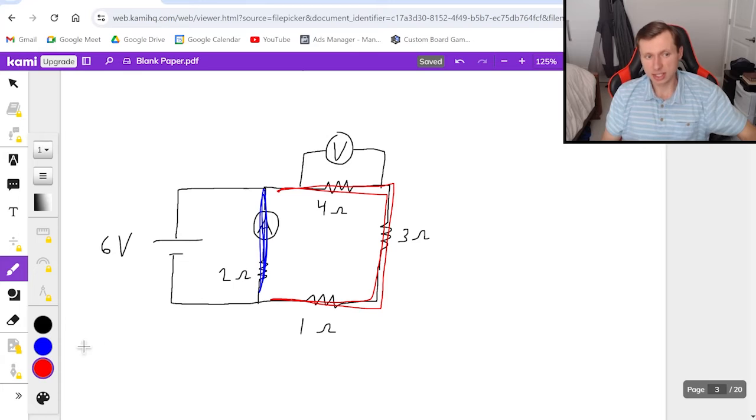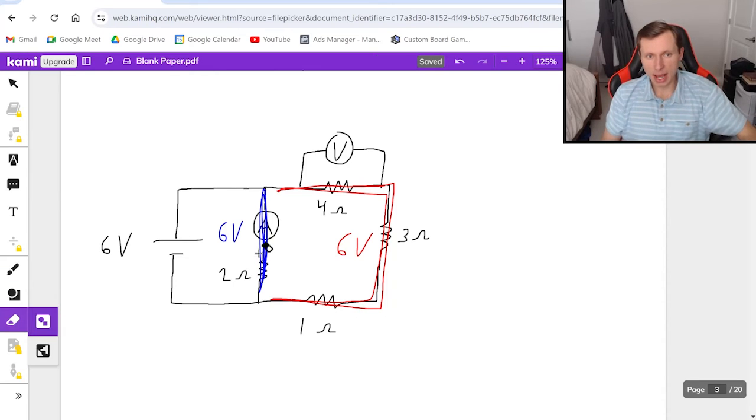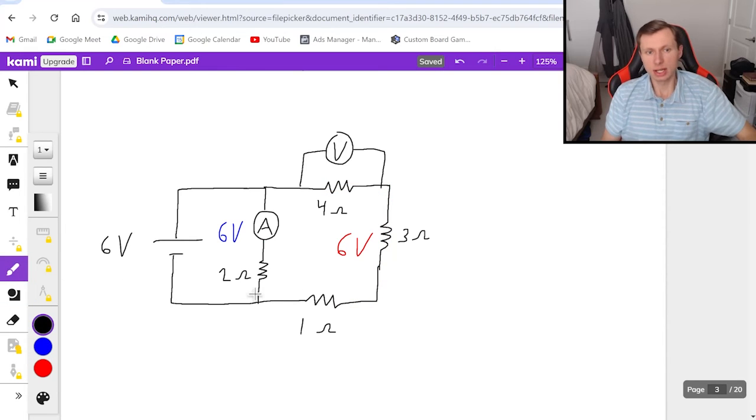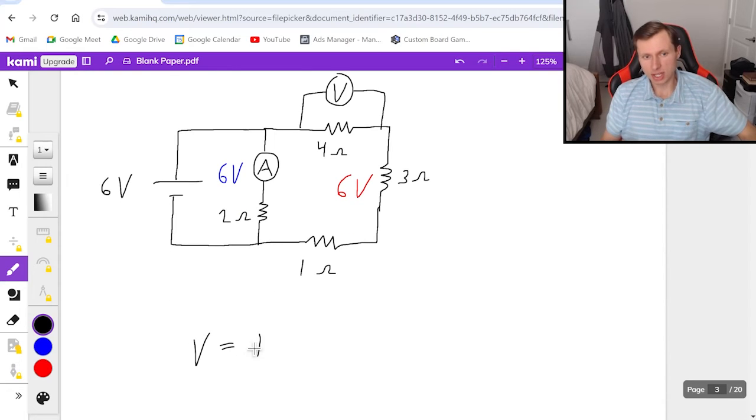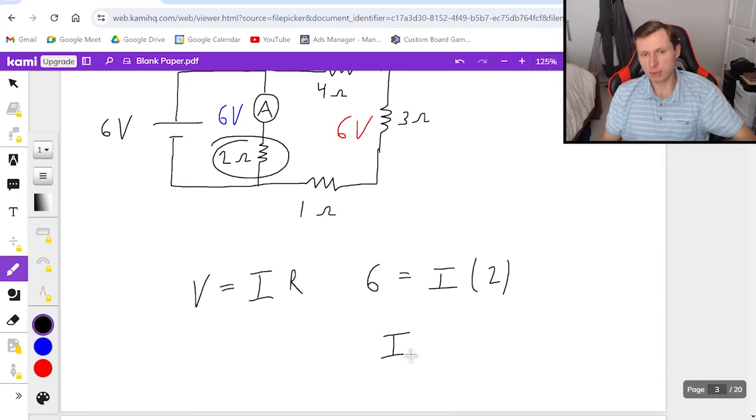And to find that current I need to remember that this blue path is in parallel with this red path. And the important thing about that is that if they're in parallel that means both of these paths have the same voltage. In this case both paths have a total of six volts. And since the blue path is really just one resistor it means that all six volts belong to that two ohms. That's great because now I can do Ohm's law. V equals I R. Voltage is six equals I which I'm solving for times resistor. This is the two ohm resistor here. So divide both sides by two and we get a current of three amps. There we already found the ammeter reading.